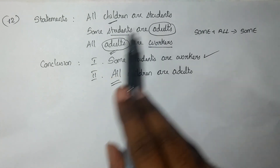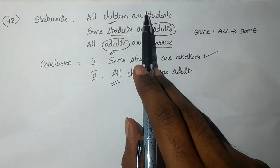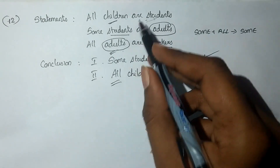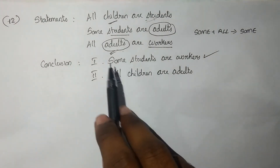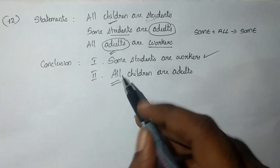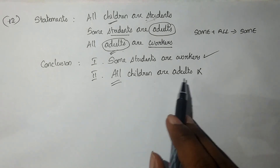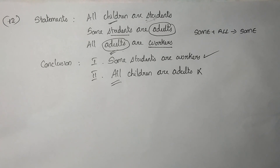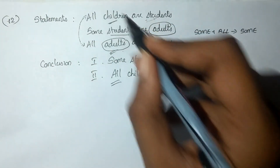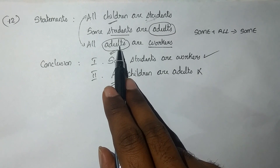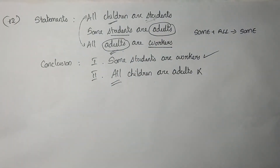For conclusion 2 — All children are adults — applying All plus All rule: All children are students, and checking if all students are adults, which is not given. So All children are adults does not follow. Only conclusion 1 follows. The answer is option A.